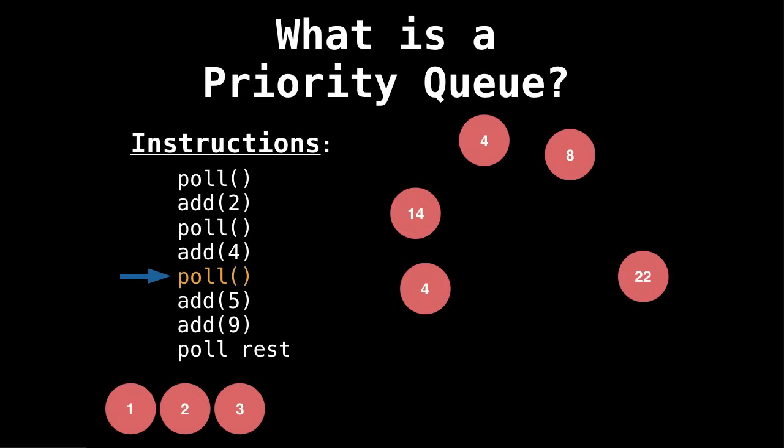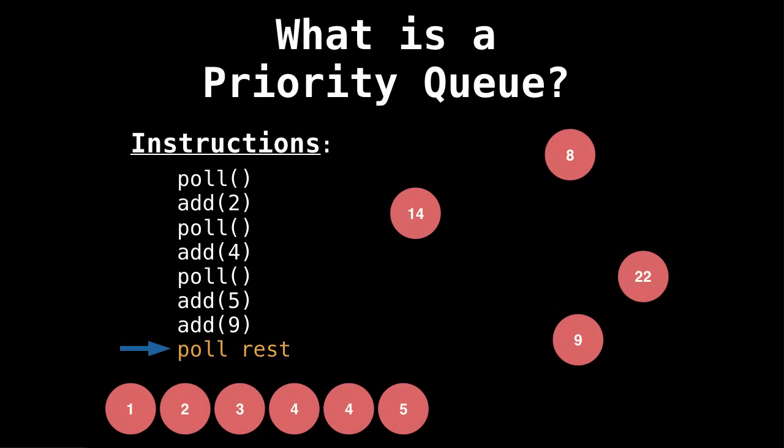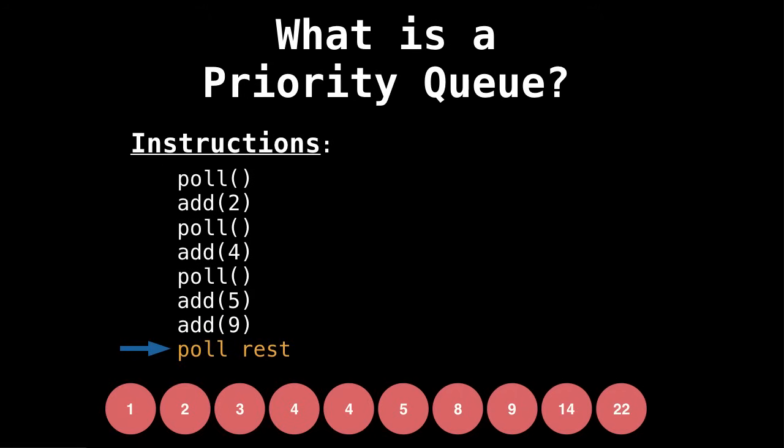Next we add four, poll the smallest, this is three, add five, also add nine, and then poll the rest. So as I poll the rest, I'm continuously grabbing the smallest element in the priority queue. So it turns out that as we added and poll numbers, we got an ordered sequence.